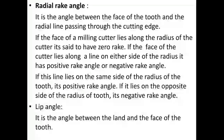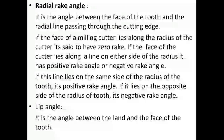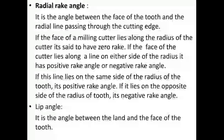Secondary clearance angle is the angle between the sloping surface of the tooth and the tangent to the outside circle. Radial rake angle is the angle between the face of the tooth and the radial line passing through the cutting edge. If the face lies along the radius, it has zero rake. If the face lies on the same side of the radius, it has a positive rake angle; if on the opposite side, it has a negative rake angle. Lip angle is the angle between the land and the face of the tooth.